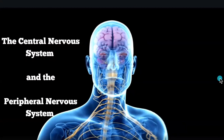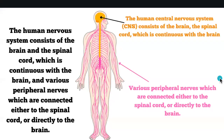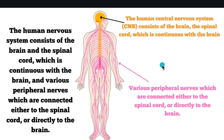So let's just have a look at that. The central nervous system consists of the brain and the spinal column, the spinal cord, and then the peripheral nerves are all the ones running away — but also it will send signals to those areas.